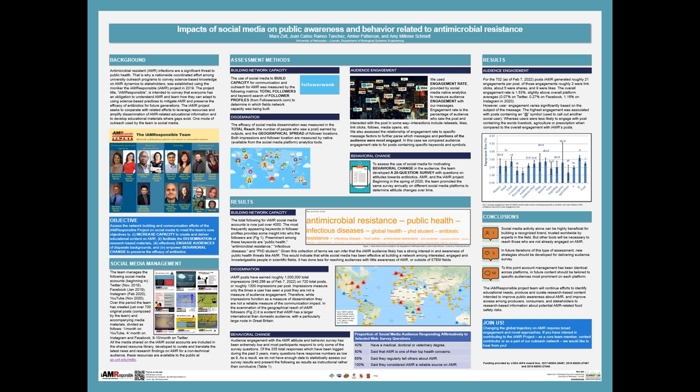For a measure of dissemination, we looked at the total reach of the posts that we made — the reach meaning the number of people who saw a post — and then we looked at the geographical spread of the follower locations. For engagement, all the social media platforms report on something called engagement rate. An engagement means that somebody who saw a post did something with the post, and your engagement rate is the number of engagements you get compared to the number of people who saw the post.